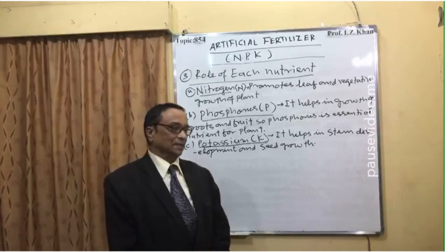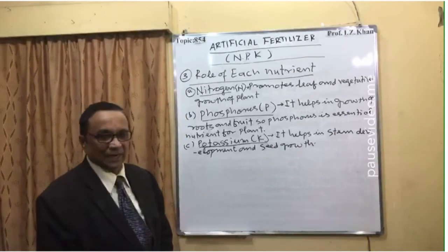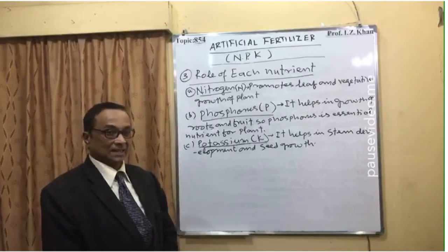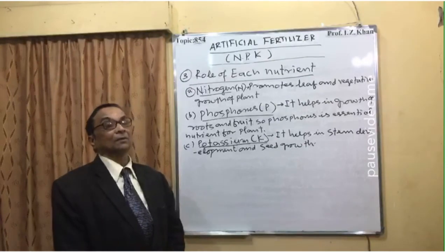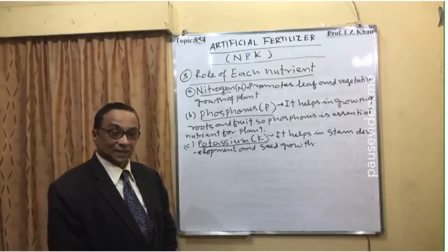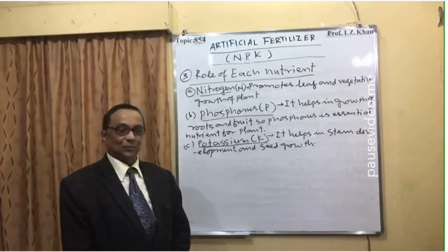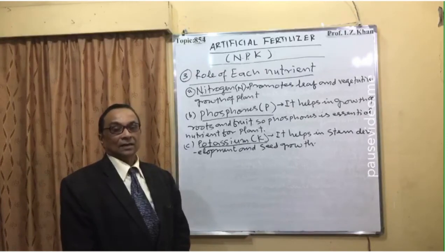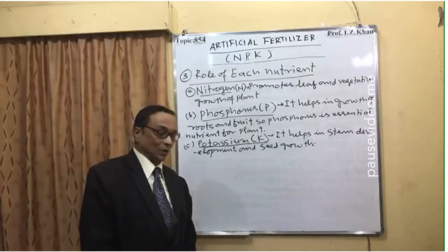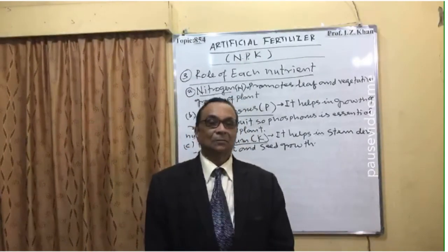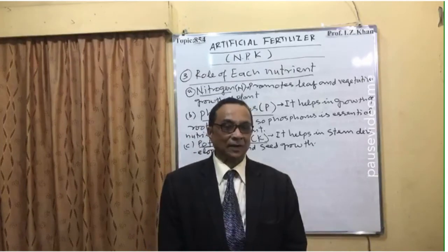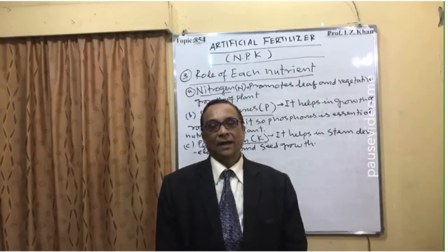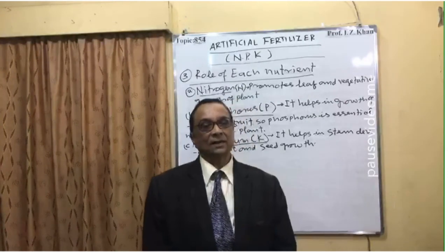Third, potassium helps in stem development and seed growth. If there is a deficiency of potassium, seeds will not look healthy — they will appear dull in color, indicating poor growth — and this will affect overall productivity. Therefore, all three ingredients — nitrogen, phosphorus, and potassium — must be balanced, ideally in a 10-10-10 ratio for a good crop. If soil testing shows one nutrient is already high, you can choose an incomplete fertilizer lacking that nutrient.